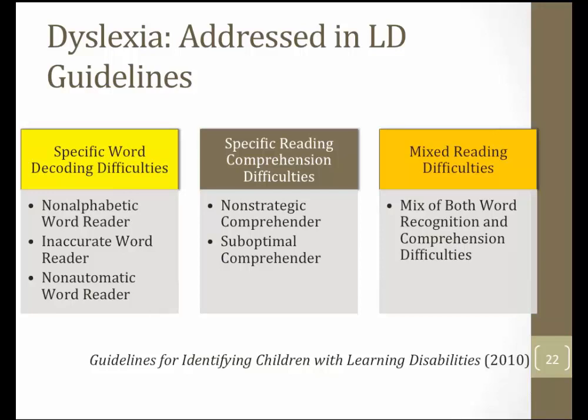The second subcategory, less common, are students with specific reading comprehension difficulties — what we would describe as non-strategic or suboptimal comprehenders. And then there's a population with a mixed reading disability profile, having both word recognition and comprehension difficulties. By and large, the most prevalent profile is the specific word decoding difficulty profile, characteristic of students with dyslexia. In your LD guidelines, on page 35, you'll see a discussion about patterns of strengths and weaknesses related to each of those reading disability profiles.